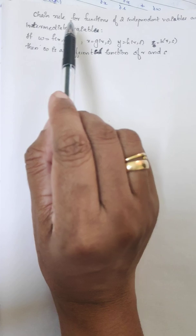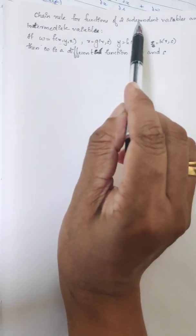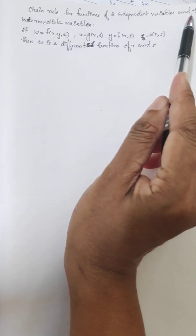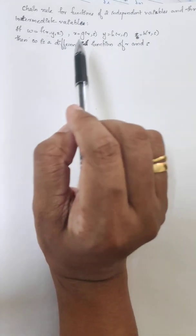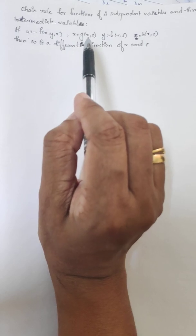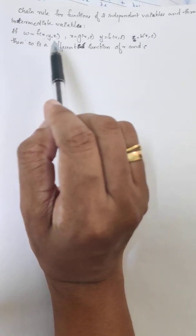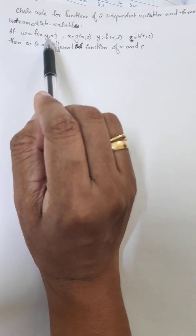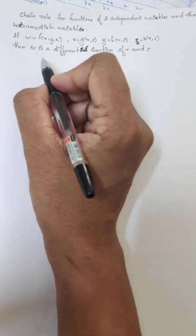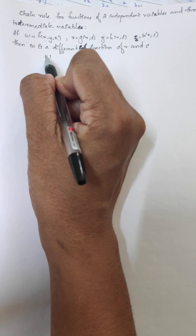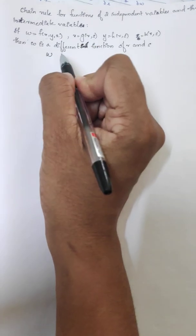Now, we have to write the chain rule for functions of two independent variables and three intermediate variables.